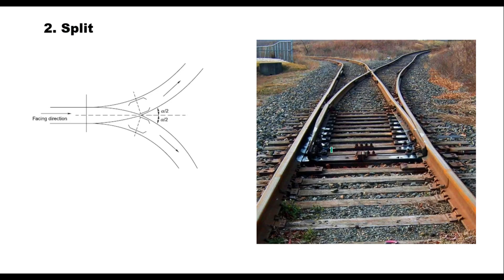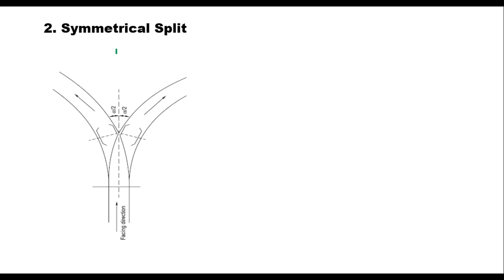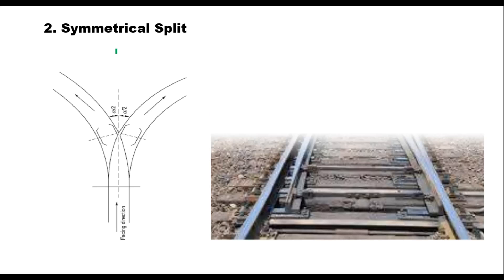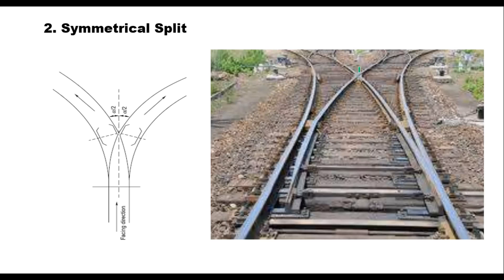A turnout from a curved main line is also called a split. When a straight line splits into two different directions with equal radii, it is called a symmetrical split. A symmetrical split is a contrary flexor in which the radii of the two curves are the same. The layout consists of a pair of points, one acute angle crossing, four curved lead rails, and two check rails.